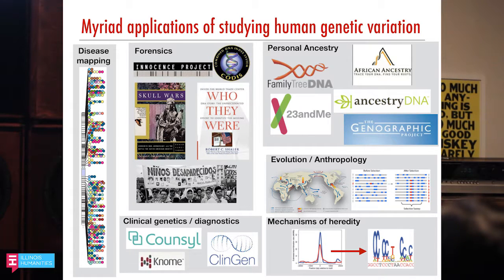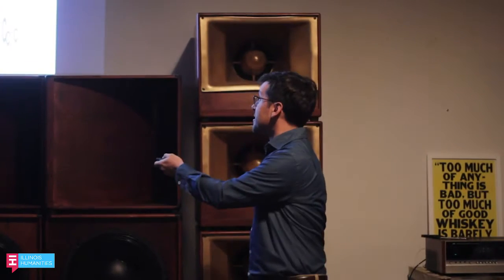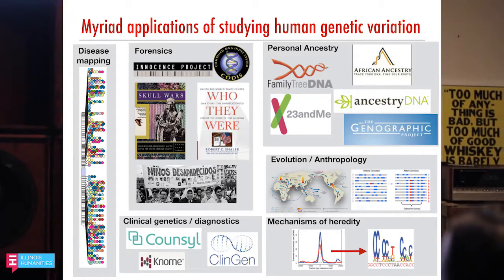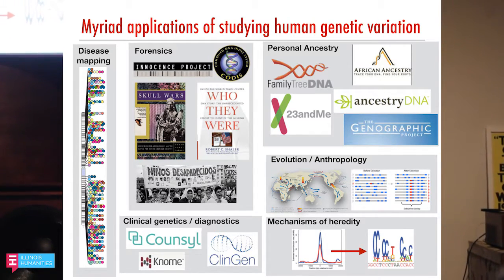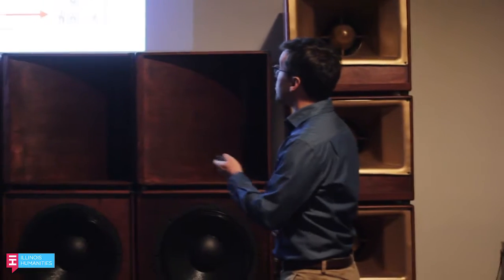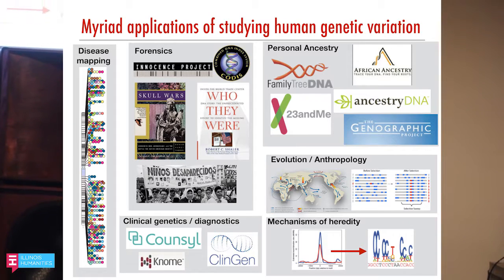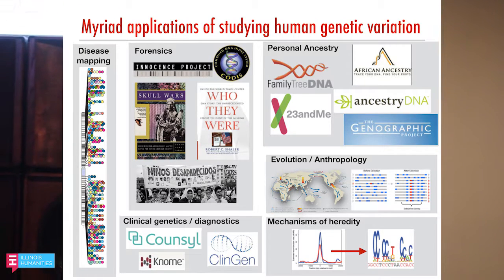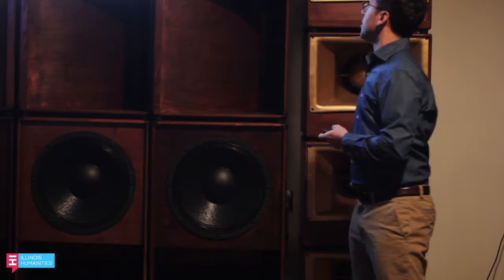From being able to understand where in a chromosome different genetic variants impact disease, which helps give us clues about therapies to intervene with the outcomes of disease. Implications in forensics — both in the criminal justice system and in the Innocence Project, and projects like with the mothers of the desaparecidos in Argentina helping find connections to lost children. In mass disaster situations like the victims of the World Trade Center, connecting them back to their families.